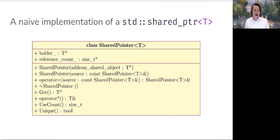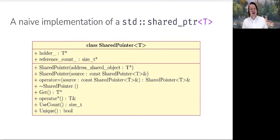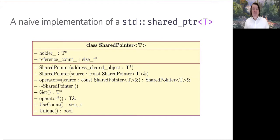get() will return a raw pointer of type T* with the address stored in holder, allowing us to get raw pointers to objects currently under shared ownership. We'll also have a dereference operator returning a reference to the object pointed to by holder. use_count() will tell us how many shared pointer objects are engaged in shared ownership of the object pointed to. And unique() will return true if the object storing the reference count — pointed to by reference_count — holds the integer value one, otherwise false.